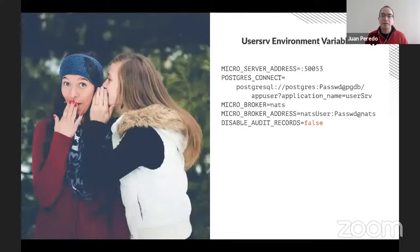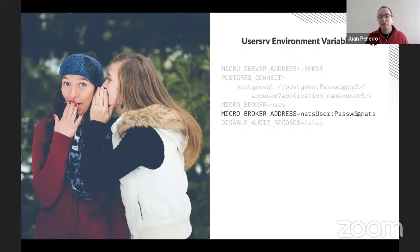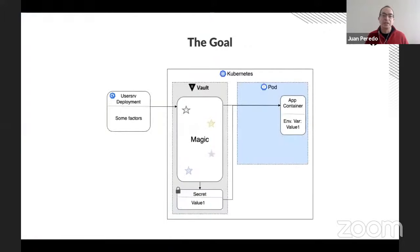We will focus on the user service initially but we'll extend it to all the services eventually. If you look at the user service environment variables, we see that there are two we need to store: the Postgres connection string and the broker address, which is the connection string to NATS. We're going to take advantage of the fact that the application runs in Kubernetes, and whenever we deploy or restart it, Vault will automatically pull the secrets and deploy them to the container as an environment variable so it can connect to the database.